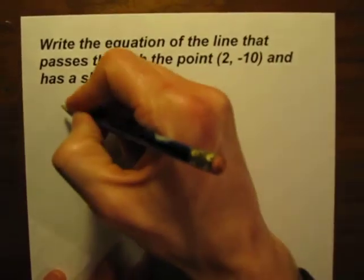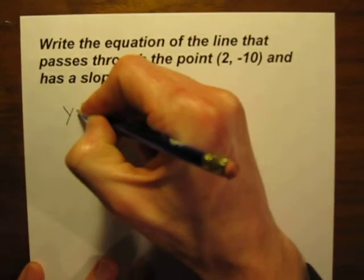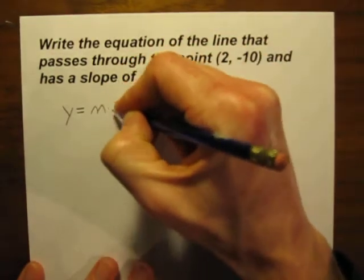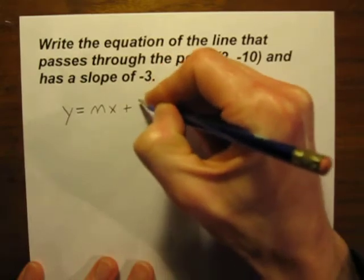We're writing the equation of a straight line, so first off this equation is going to be in slope intercept form. Hopefully you remember slope intercept form is y equals mx plus b.